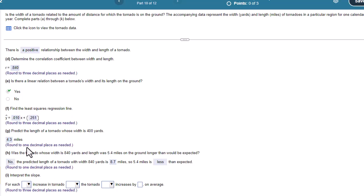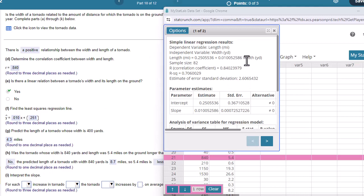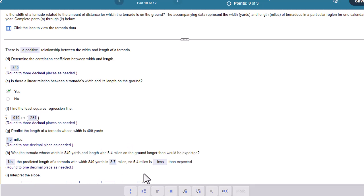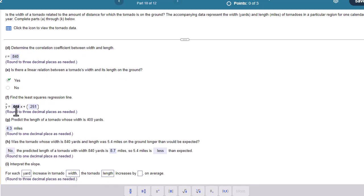So now let's interpret the slope. So here's my slope here at 0.01. So for each, and we need to think of our units. And here's our equation again. So for each one unit increase in x. And what are our units here? They're in yards. So one yard increase in my width. The length will increase by, and it's whatever it is in the slope, 0.01. By 0.01, it should say miles here. Maybe I'm going to report that. And by the time you see it, it'll say miles. 0.01 miles on average.